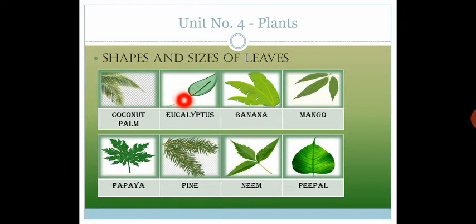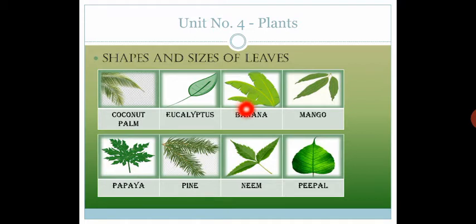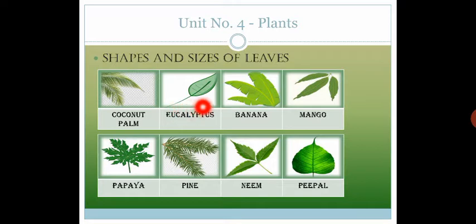Leaves grow on plants — وہ plants کے اوپر grow کرتی ہیں — and plants store their food in their leaves, stems, and roots. Leaves are usually green in color and have many shapes. Some leaves are dark green and some are light green in color.